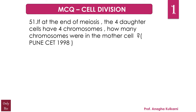Question number 51: If at the end of meiosis, the four daughter cells have four chromosomes, how many chromosomes were there in the mother cell? A. 8, B. 16, C. 2, D. 4. And the correct answer for this question is 8.